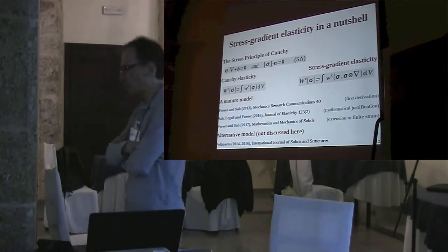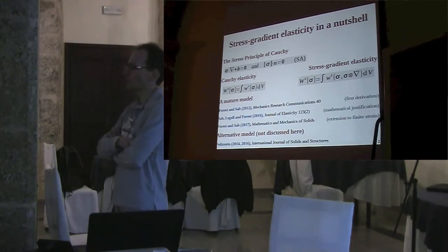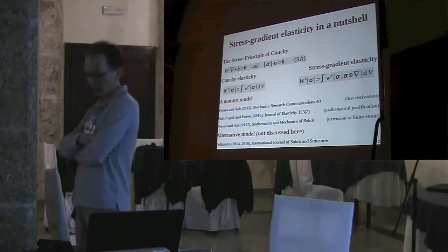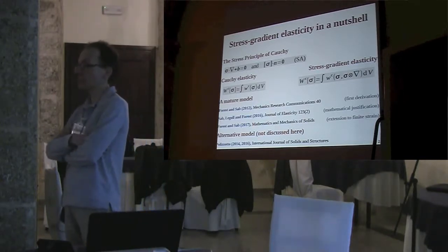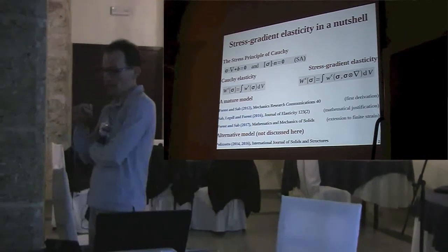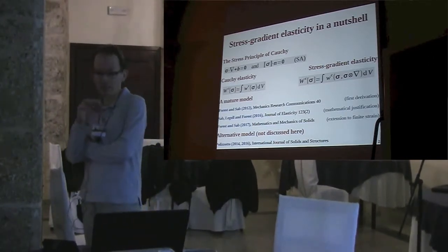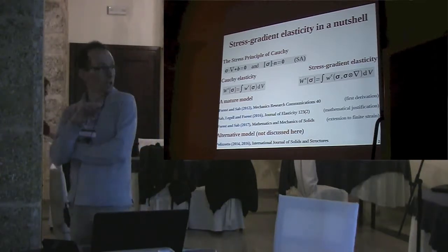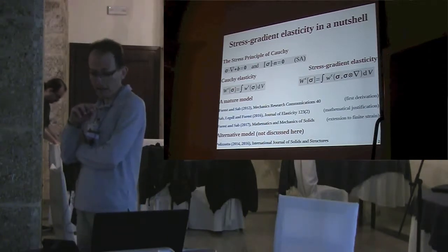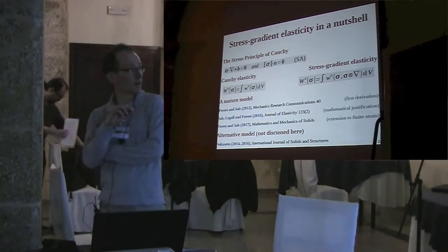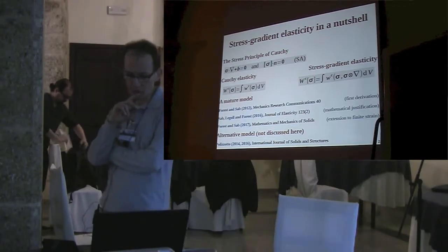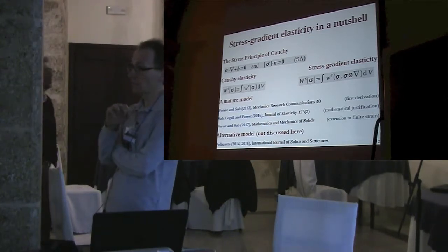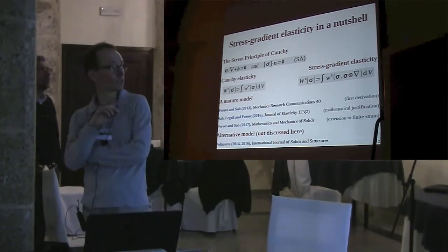Maybe just a very brief definition of what we mean by stress gradient material. We all know strain gradient materials where the strain energy density depends on the strain and its gradient. Stress gradient materials are defined the same way with respect to the complementary energy density, which depends on the stress and its first gradient. We assume that the stress principle of Cauchy still applies, meaning the stress tensor is still governed by the standard equilibrium equation.